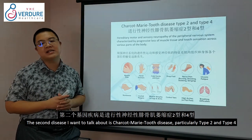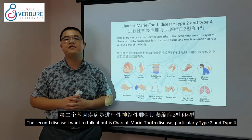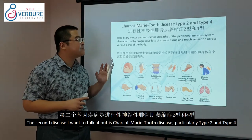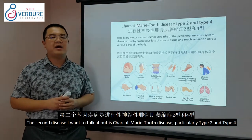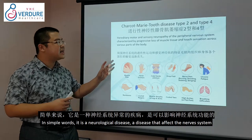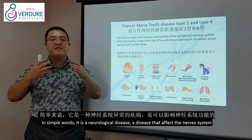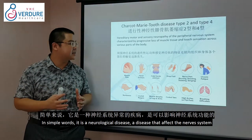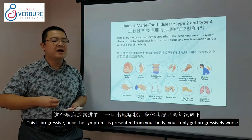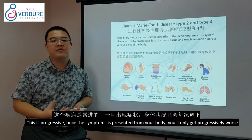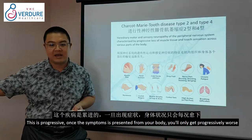The second disease is Charcot-Marie-Tooth disease, specifically type 2 and type 4. In simple words, this is a neurological disease — it affects the nervous system. It is progressive, meaning once symptoms appear, you will only get progressively worse.